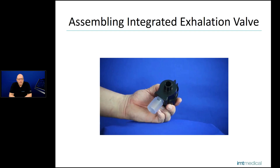You can disinfect the exhalation valve in many ways. You can immerse it, use cold disinfection, or autoclave it at 134 degrees. Make sure when you autoclave it that the exhalation valve is disassembled and all parts are dry, and then you can autoclave it for 5 to 18 minutes.